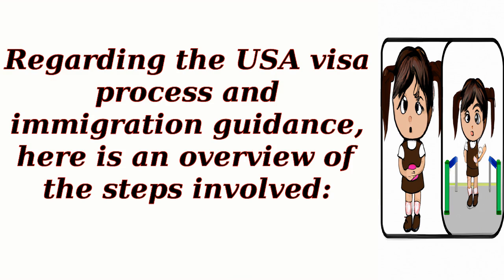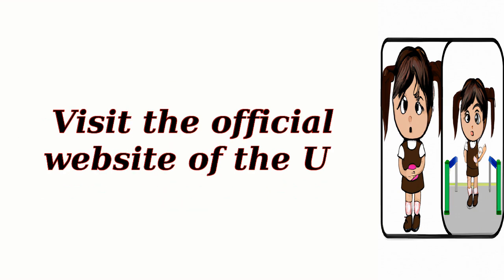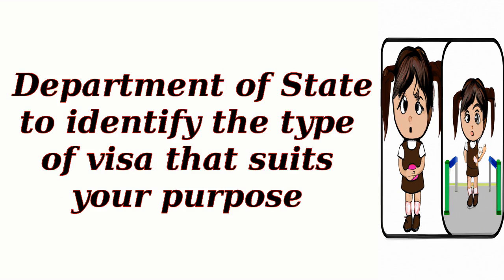Regarding the USA visa process and immigration guidance, here is an overview of the steps involved. First, determine the type of visa you need. The United States offers various types of visas, including tourist visas, work visas, student visas, and more. Visit the official website of the U.S. Department of State to identify the type of visa that suits your purpose.